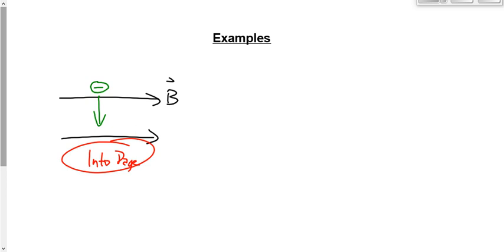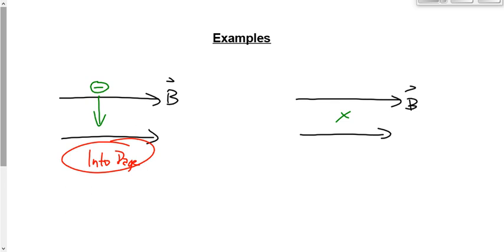Let's draw another one. We'll make the magnetic field to the right again — external magnetic field. But this time I've got a negatively charged particle going into the page, as represented by the X — an electron or some kind of negative ion. Thumb in the direction of the particle, which is into the page; fingers go in the direction of the external field, which is to the right; palm points toward the top of the page. If your page is horizontal, it wouldn't be 'up,' but it would still be toward the top of the page.